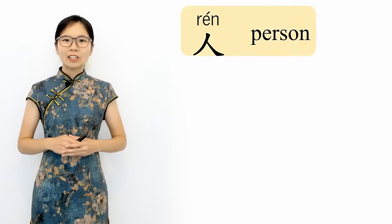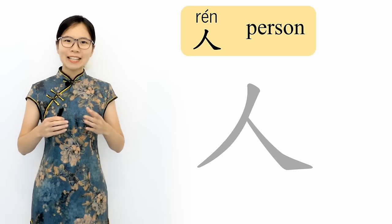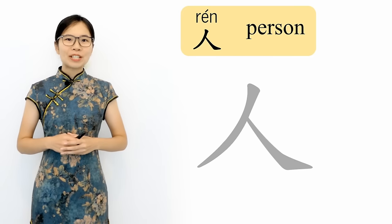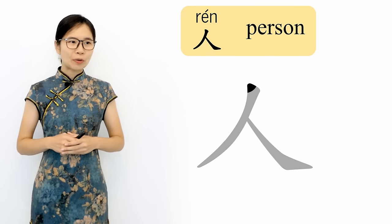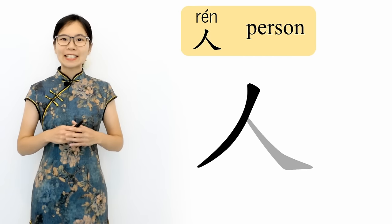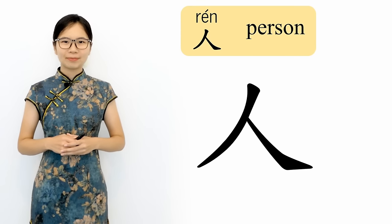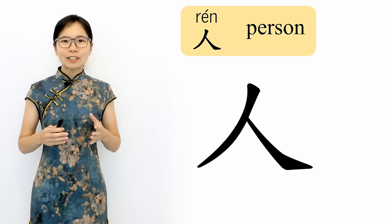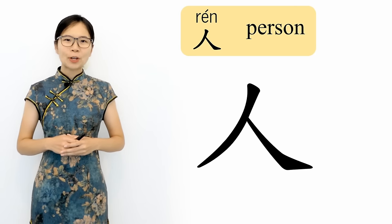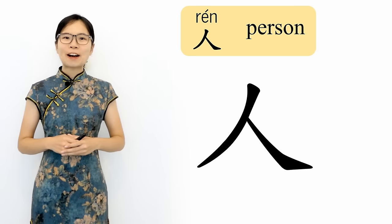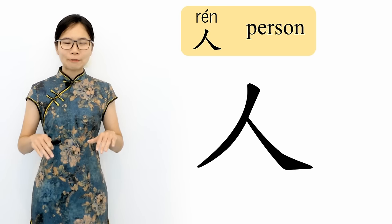Now let's take a look at how to properly write the character 人. 人 is written using two strokes: first is a downward stroke to the left, and the second is a shorter downward stroke to the right. I've placed a link to a practice sheet you can download in the description for this video.